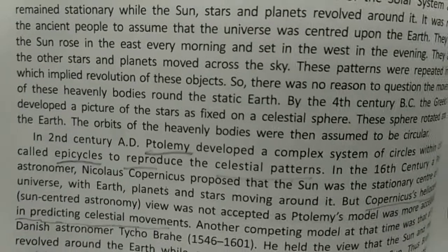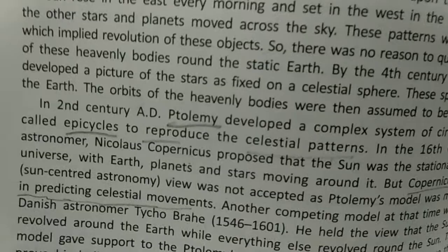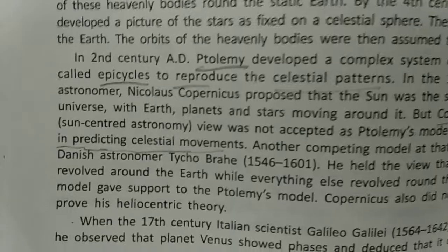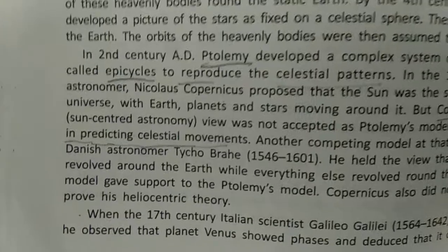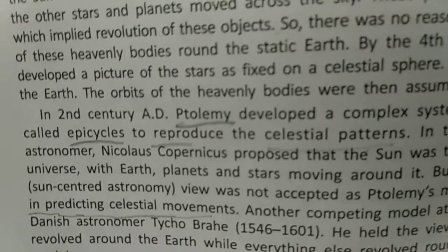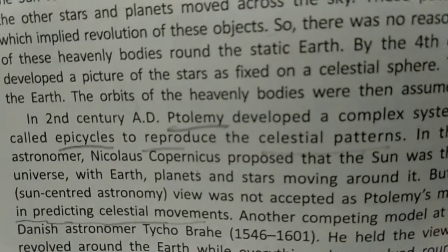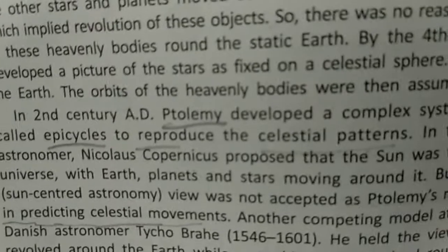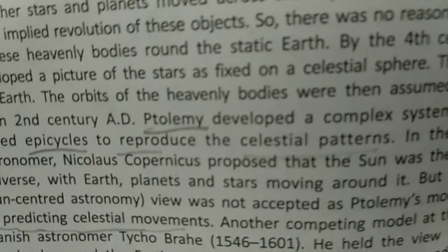In the sixteenth century, the Polish astronomer Nicholas Copernicus proposed that the Sun is stationary and stands at the center, while the earth, the planets, and the moon are moving around it. However, his view was not accepted so easily, and his model faced competition.